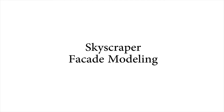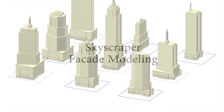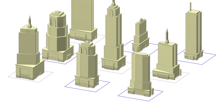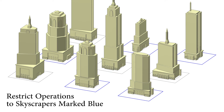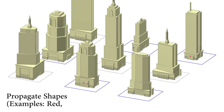Here we show a few operations performed during a typical facade modeling session. Modeling operations are restricted to the skyscrapers marked in blue. Example placements are shown in red and propagated placements in green.